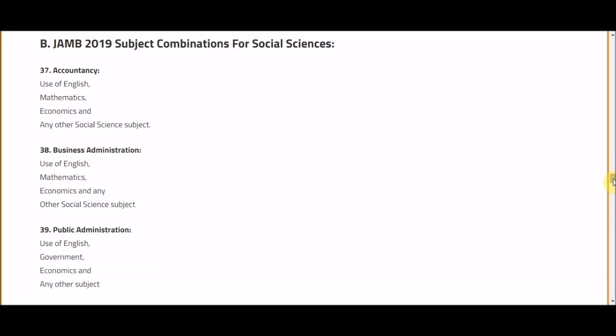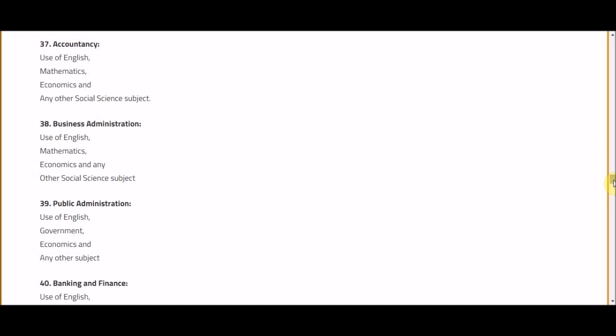Right now I think it's in a CD format, so when you get your JAMB form make sure you collect that CD. Go through the particular course you want to select and get the entry requirements — it's all written there on the brochure, now in CD form. For example, for Accountancy you can see it requires Use of English, Mathematics, Economics, and any other social science subject.